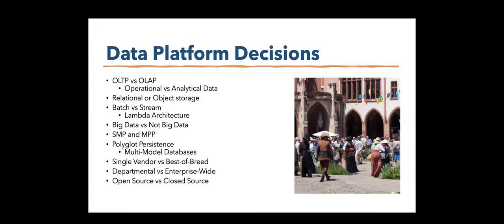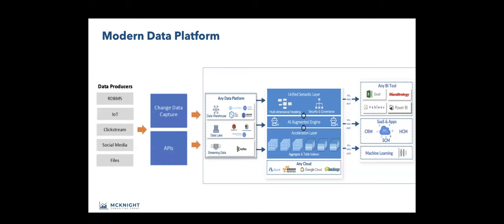A modern data platform — I could have drawn this about ten different ways. When I walk into a shop, I walk in with about ten different laminated architectural patterns, and it's constantly changing. There are so many different starting points enterprises are at. Your starting point has a lot to do with where you want to go — you're not going to erase everything and jump to an architecture that has nothing to do with where you are today. All the layers — operations, analytic layers, data science layers — can be covered by a modern platform.